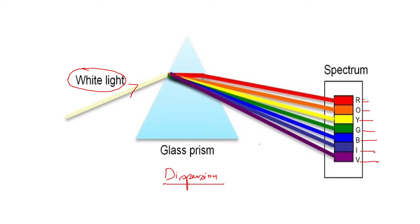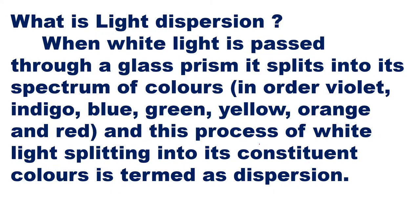That can be called recombination of color. What is light dispersion? When white light is passed through a glass prism, it splits into its spectrum of colors in order: violet, indigo, blue, green, yellow, orange, and red. This process of white light splitting into its constituent colors is termed dispersion, depending on the colors' wavelengths, the material, and the angle of incidence.